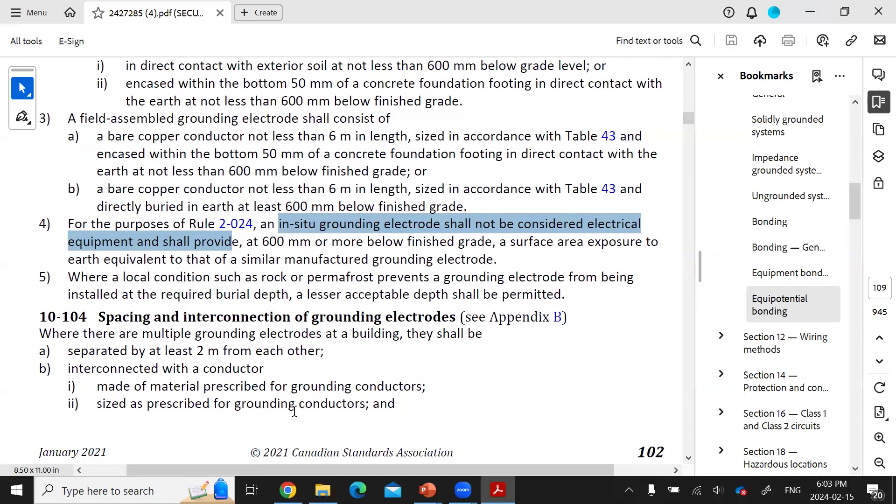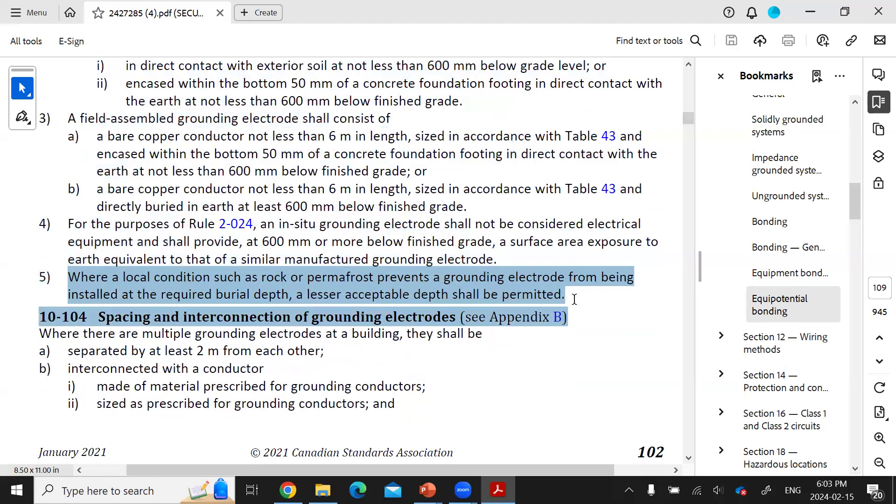Sub-rule 5 says where the local conditions such as rock or permafrost prevent the grounding electrode from being installed at that burial depth, a lesser acceptable depth might be acceptable. But in this case, you have to make sure that your local inspection authority is going to make the final determination about what the most appropriate depth would be.